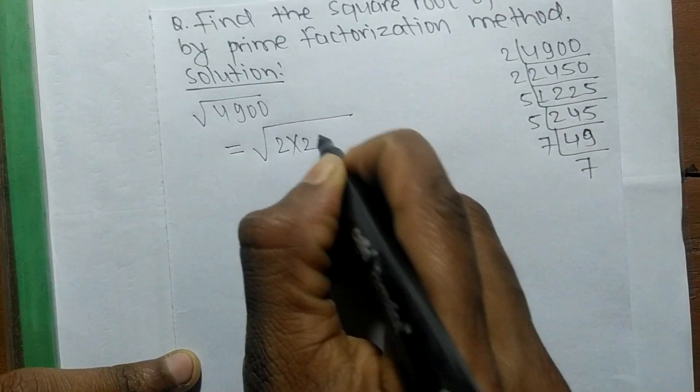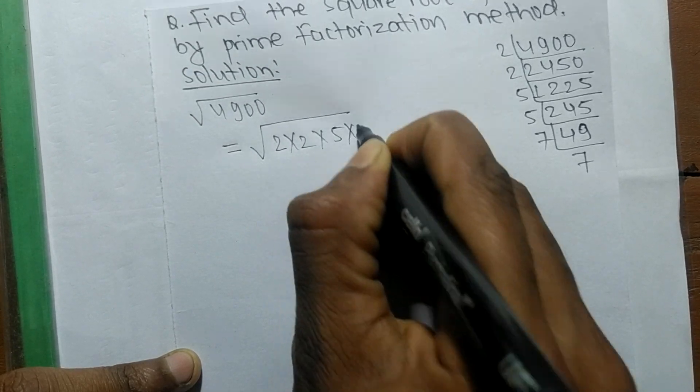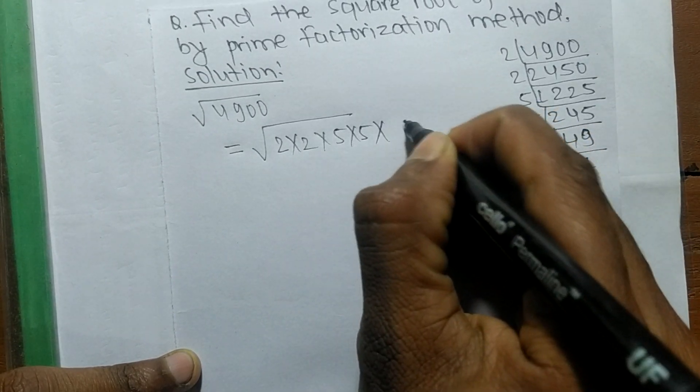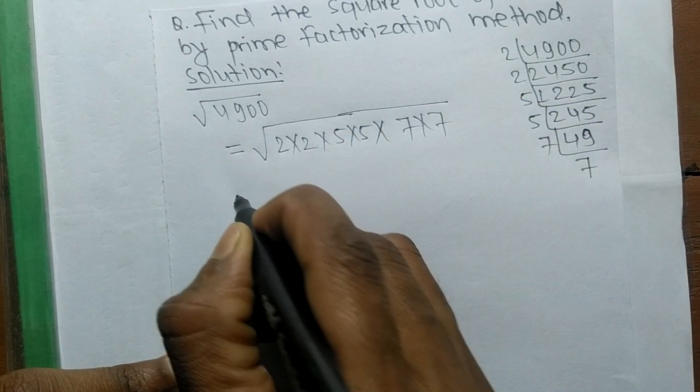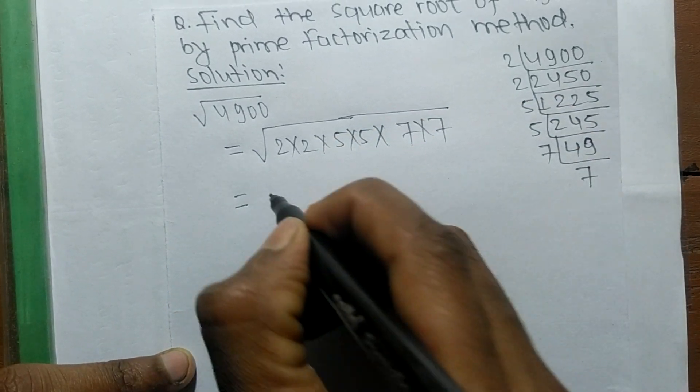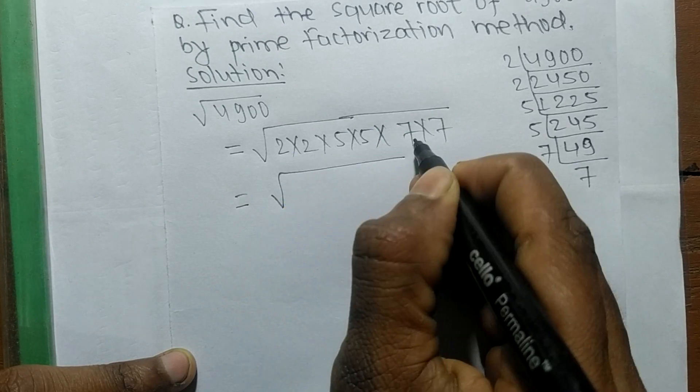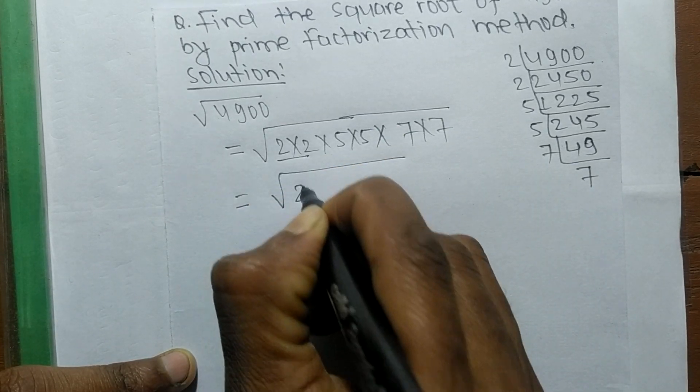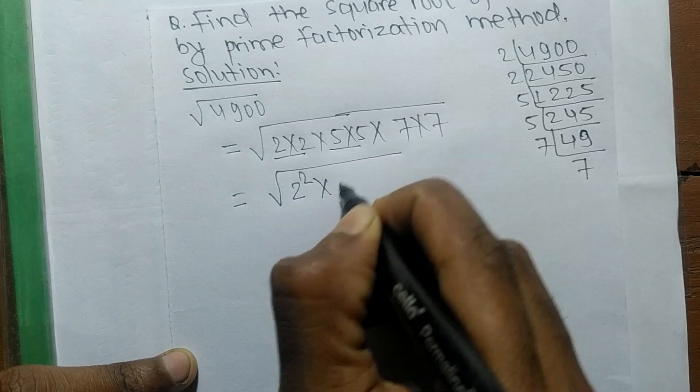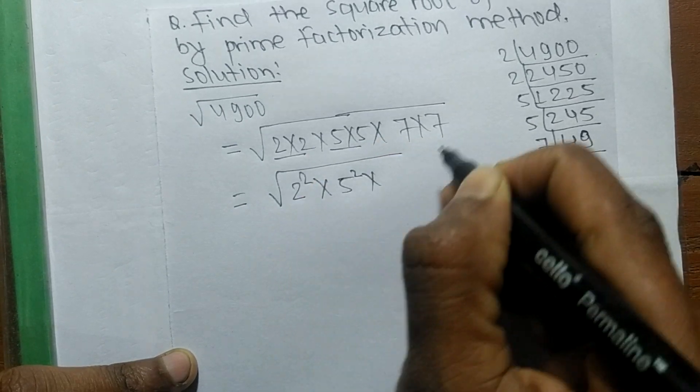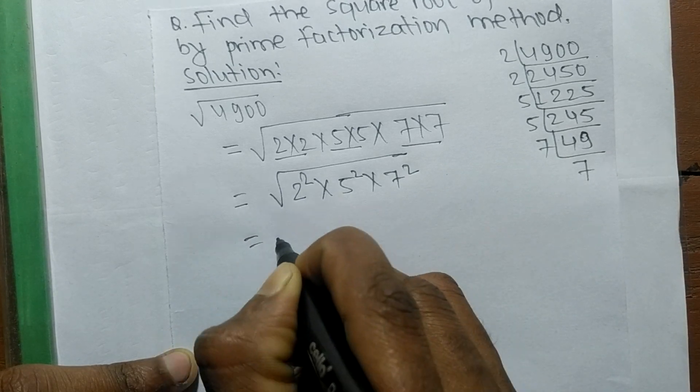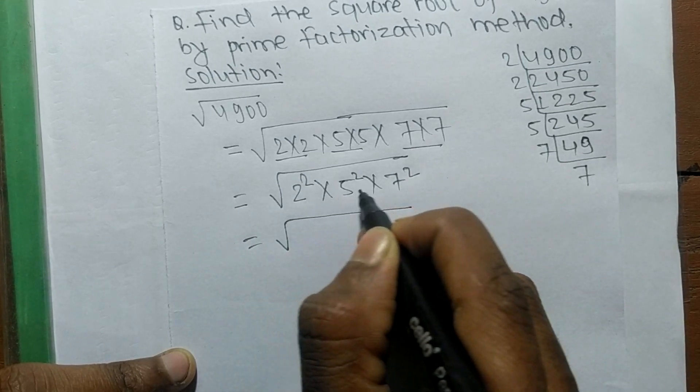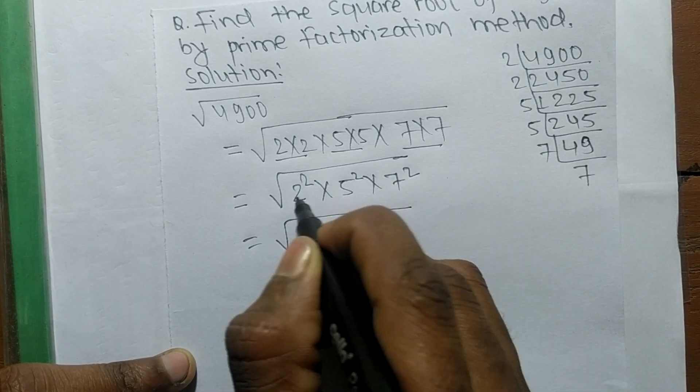The prime factors are 2 into 2 into 5 into 5 into 7 into 7. Since we are finding the square root, we make pairs of these numbers. So 2 into 2 means 2 square, 5 into 5 is 5 square, and 7 into 7 is 7 square.